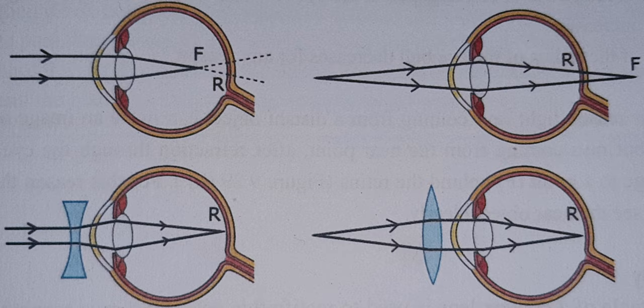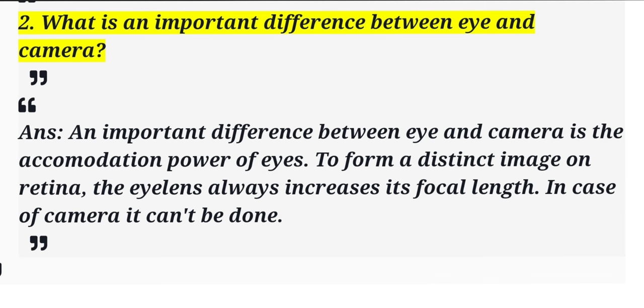Whenever light is coming inside your eye, it goes through your retina. The eye lens always increases its focal length. In the case of a camera, it cannot be done. That is the defect of seeing something — like a vision problem. If you have a vision problem, nowadays it's very challenging.